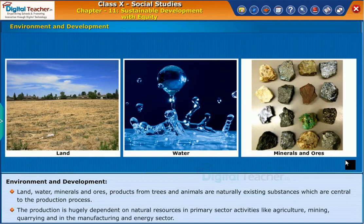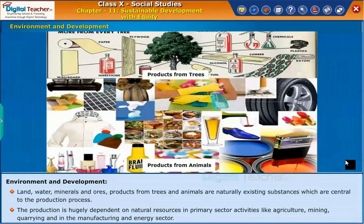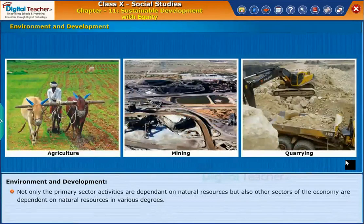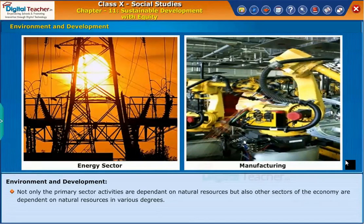Production is hugely dependent on natural resources in the primary sector. Activities like agriculture, mining, quarrying, and in the manufacturing and energy sector. Not only primary sector activities, but also other sectors of the economy are dependent on natural resources in various degrees.